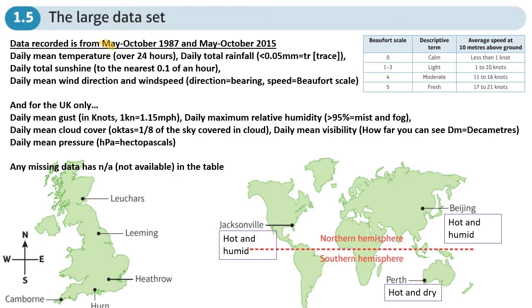The large data set is basically a huge spreadsheet with loads of data concerning weather information from particular locations. First of all, the data was recorded in only two years: May and October from 1987, and May and October in 2015. So no other years recorded, no other months recorded outside of those. So you just need to remember May to October in 1987 and May to October in 2015.